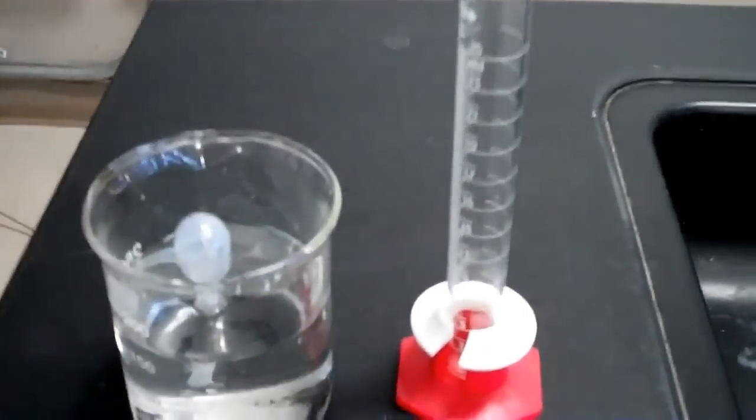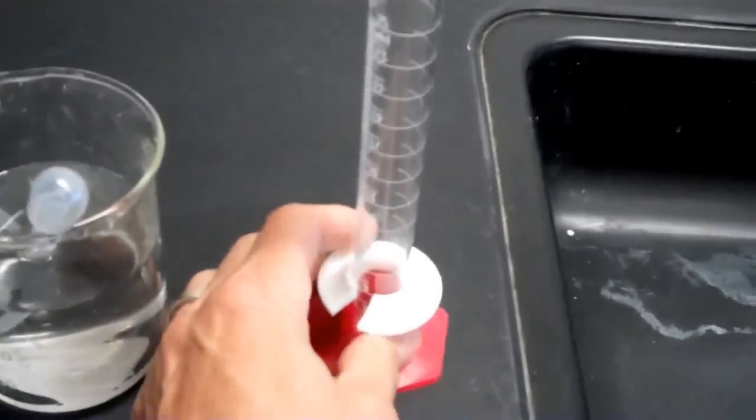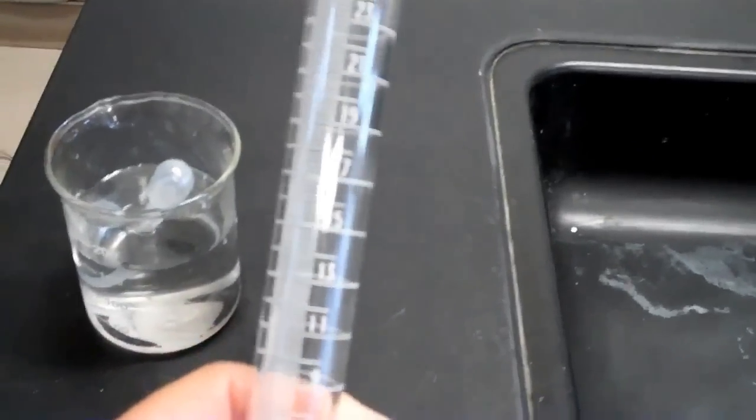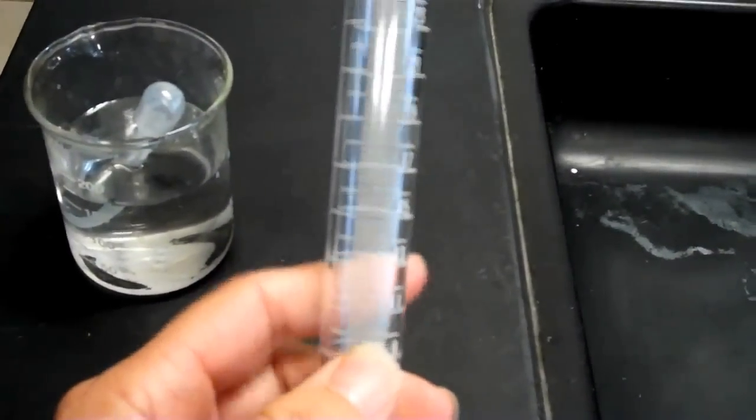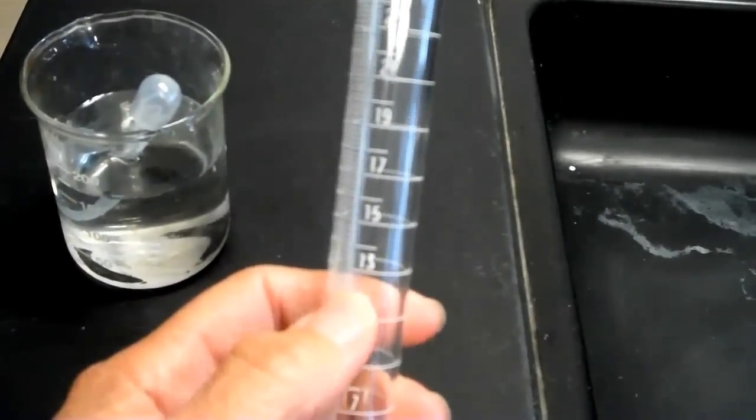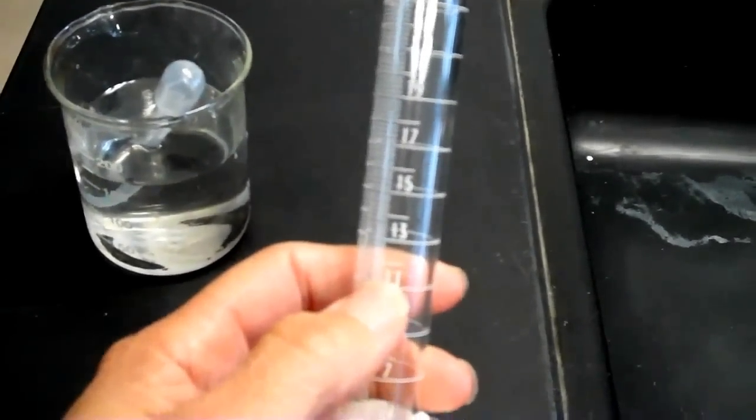So I'm going to start with a graduated cylinder here. And first thing you need to do is look at the marks on the graduated cylinder and make sure that you know what the smaller marks represent.